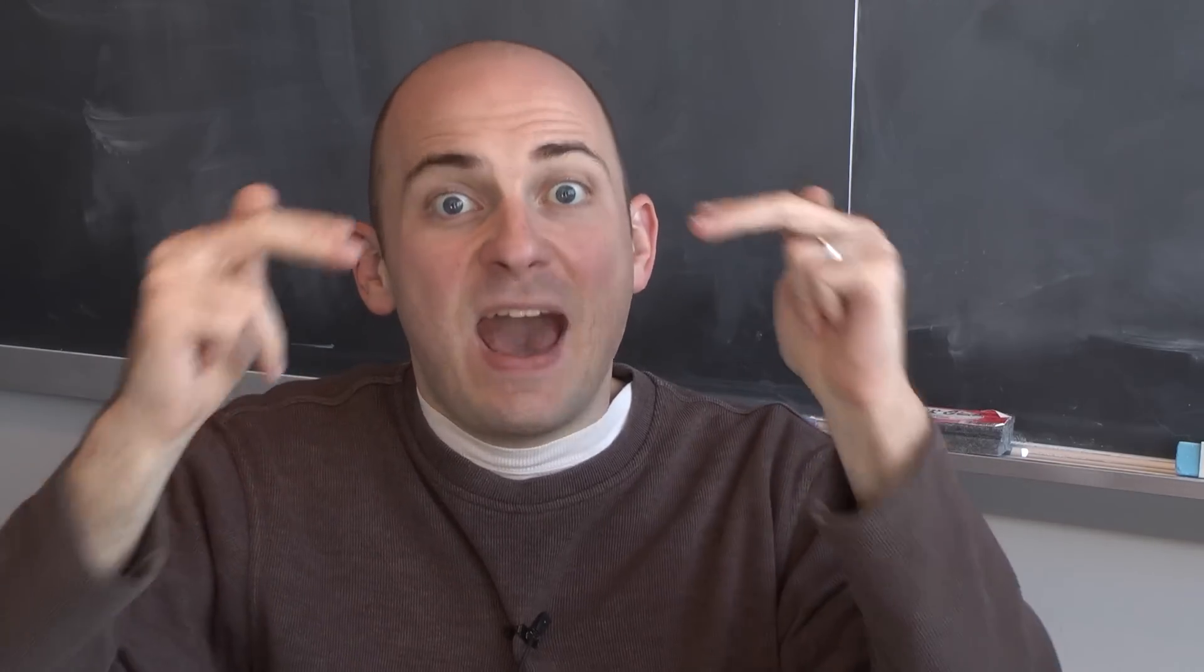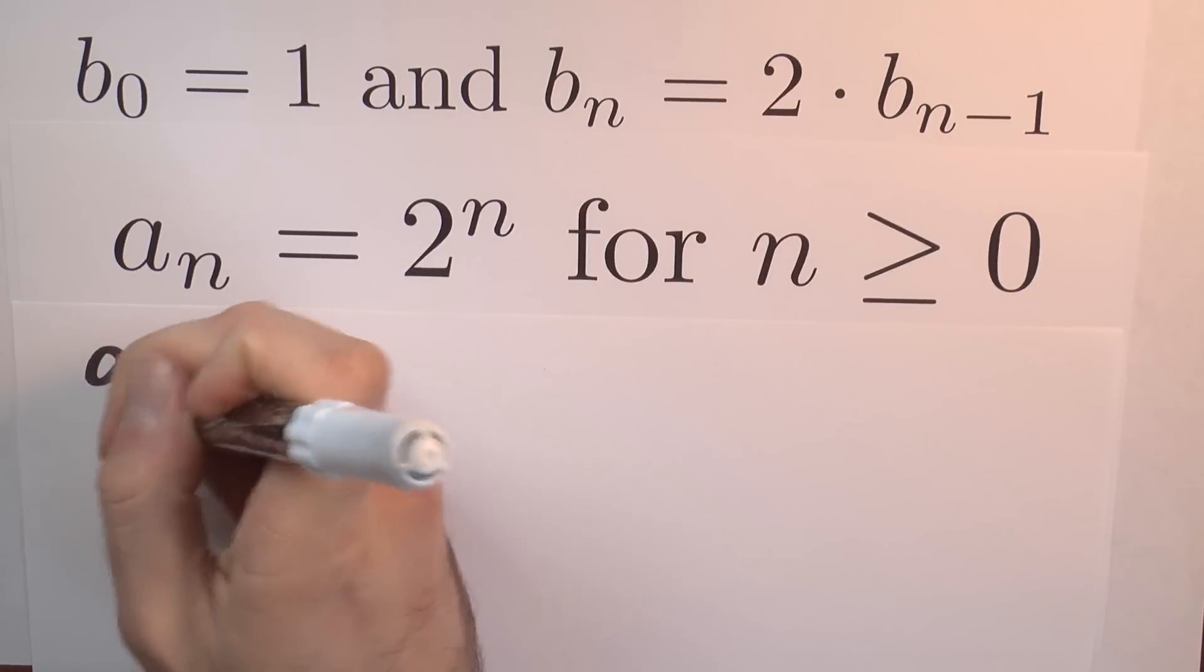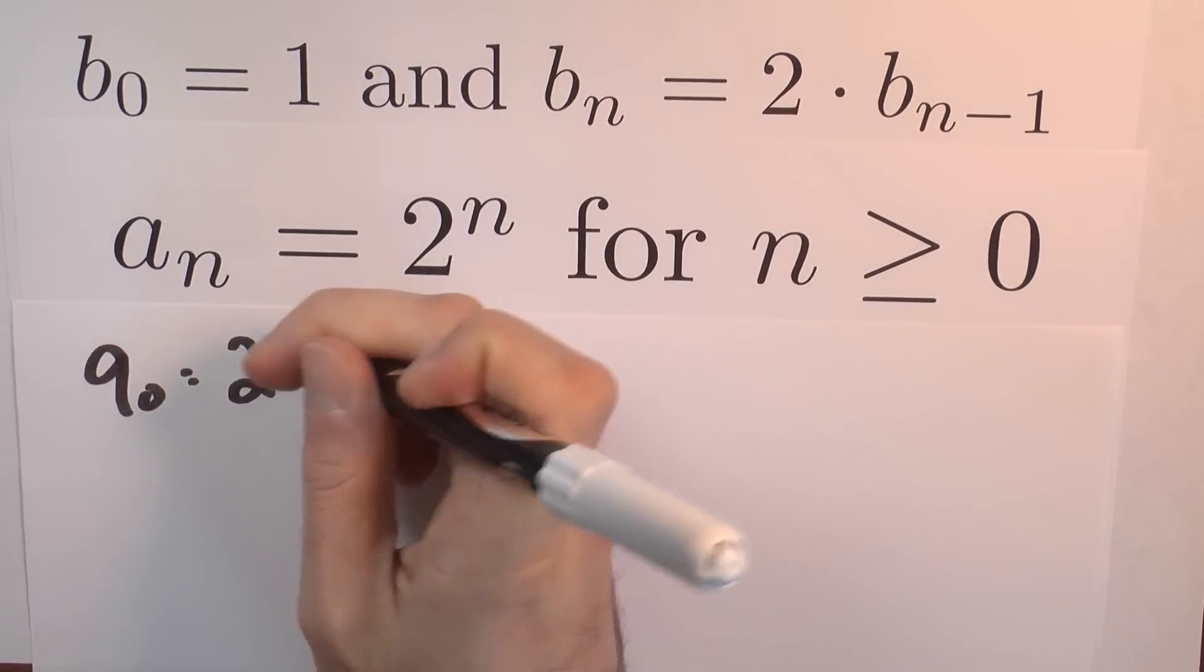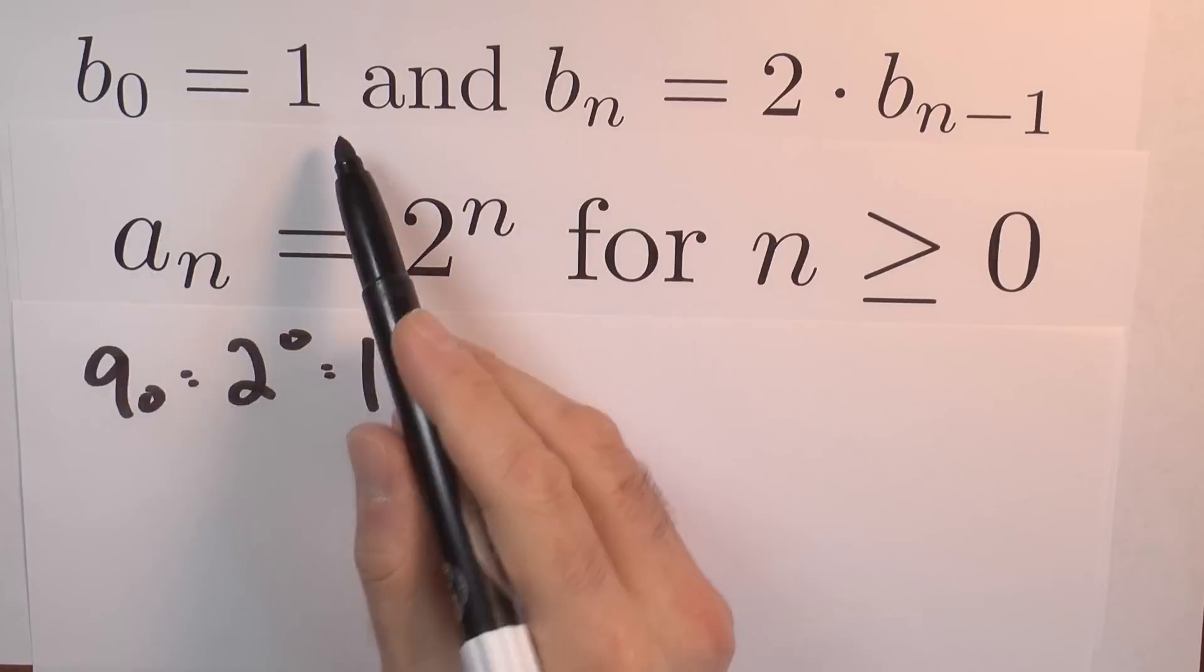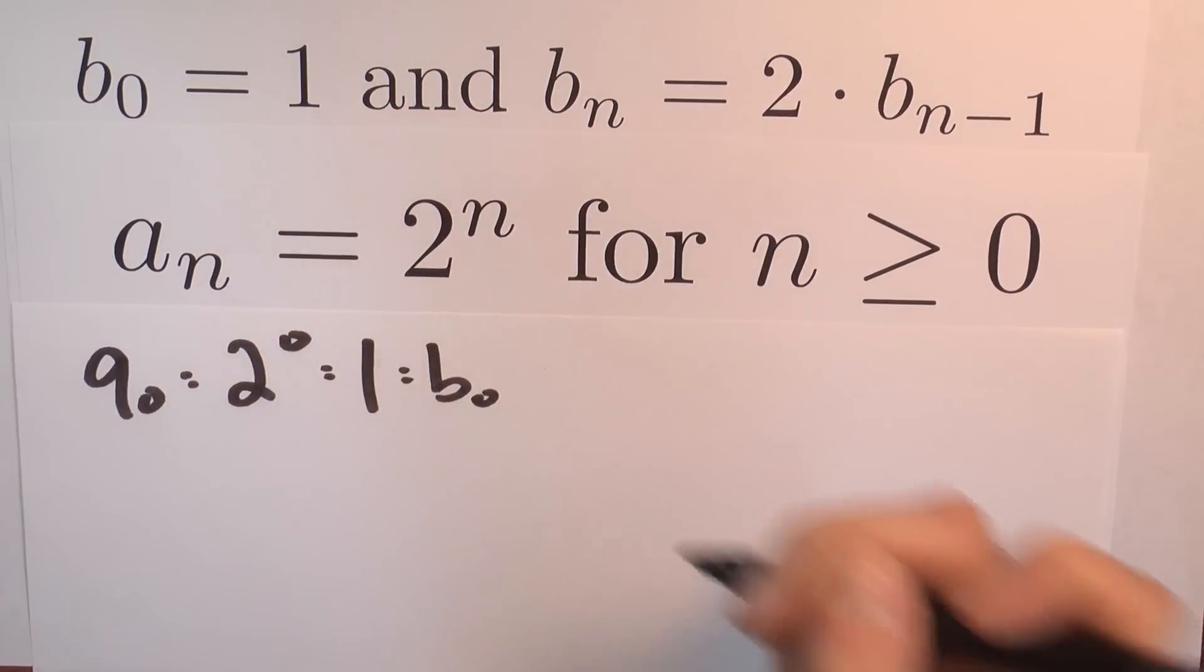They both start with a term labeled 0, and corresponding terms have the same value. A sub 0 is 2 to the 0, using this formula, which is 1. And that's the same as B sub 0.